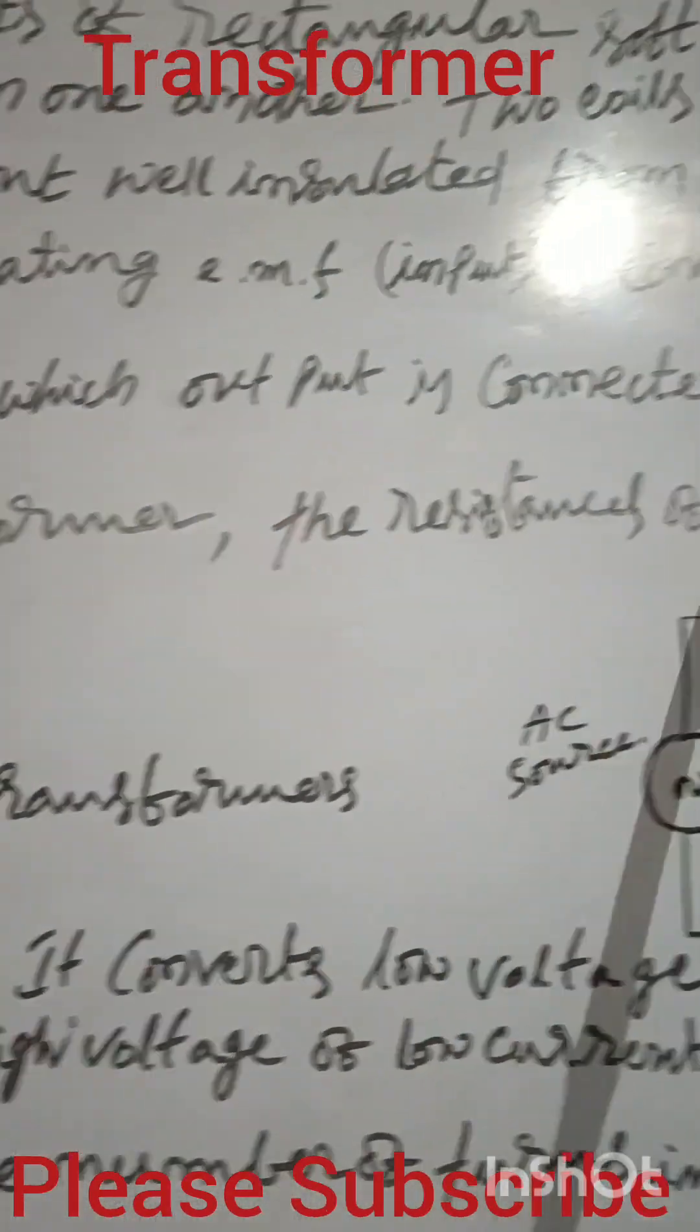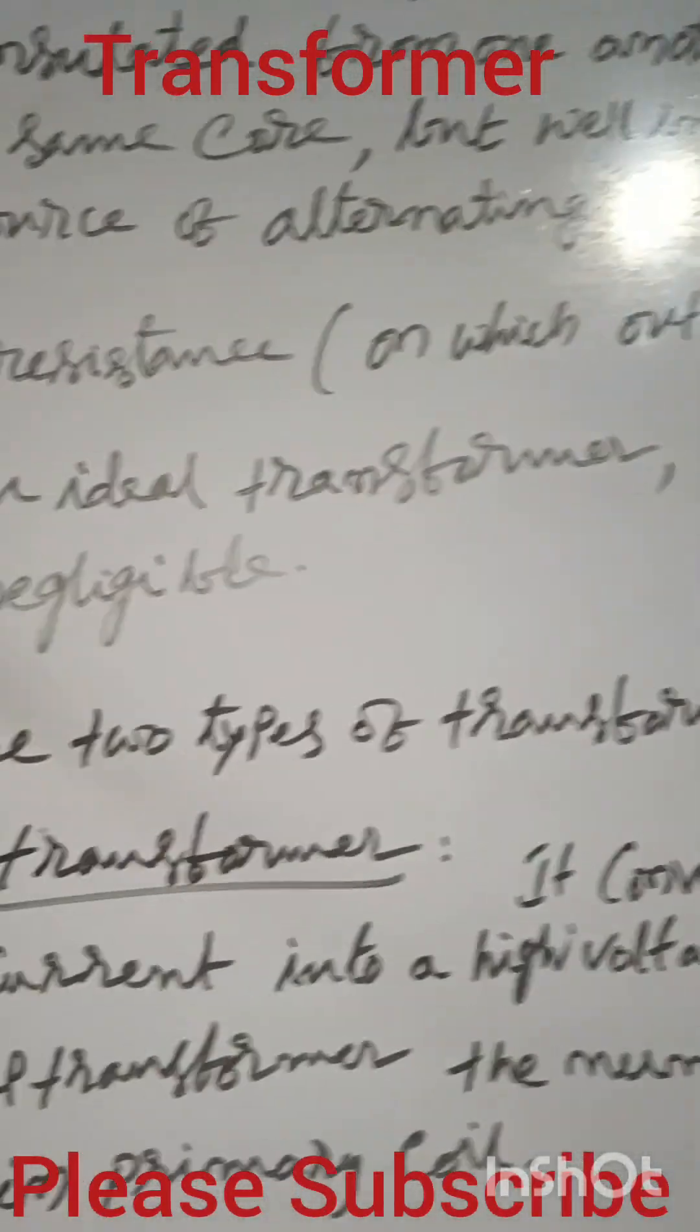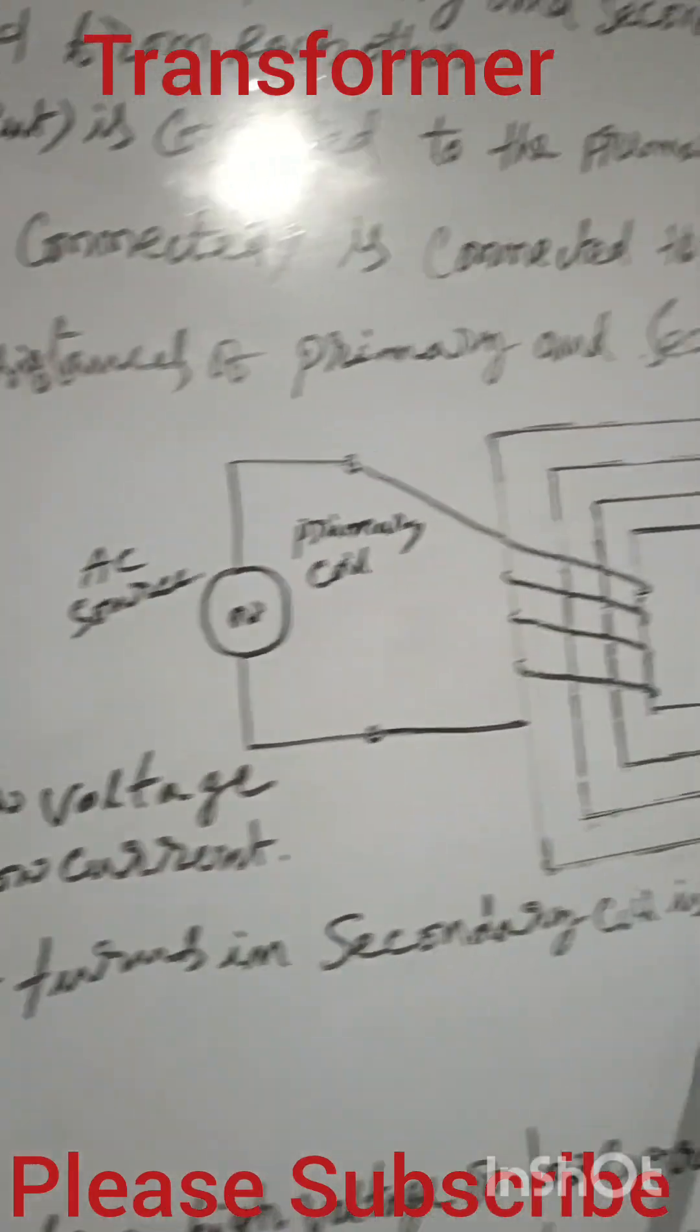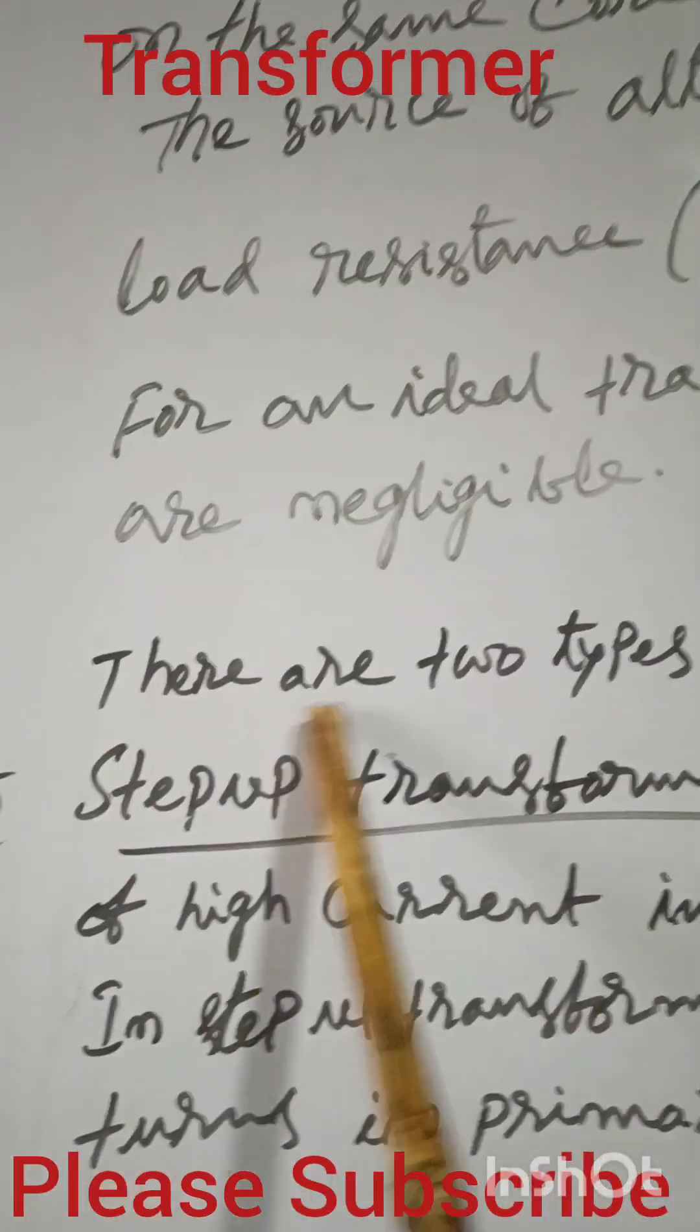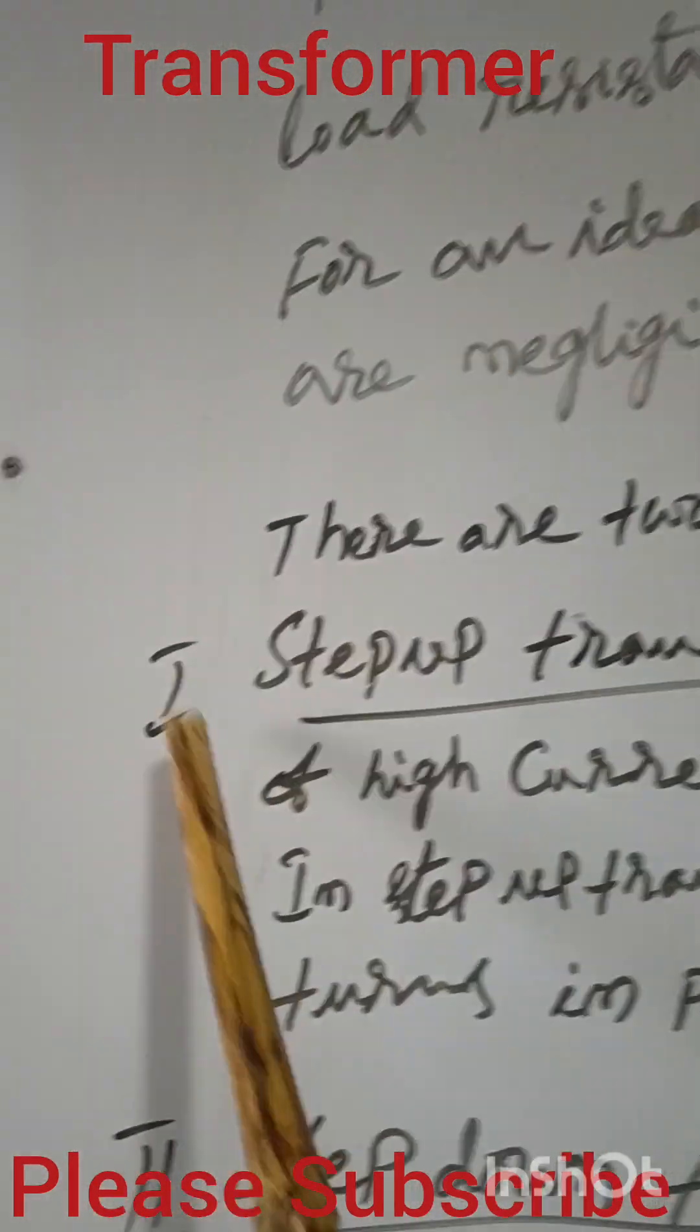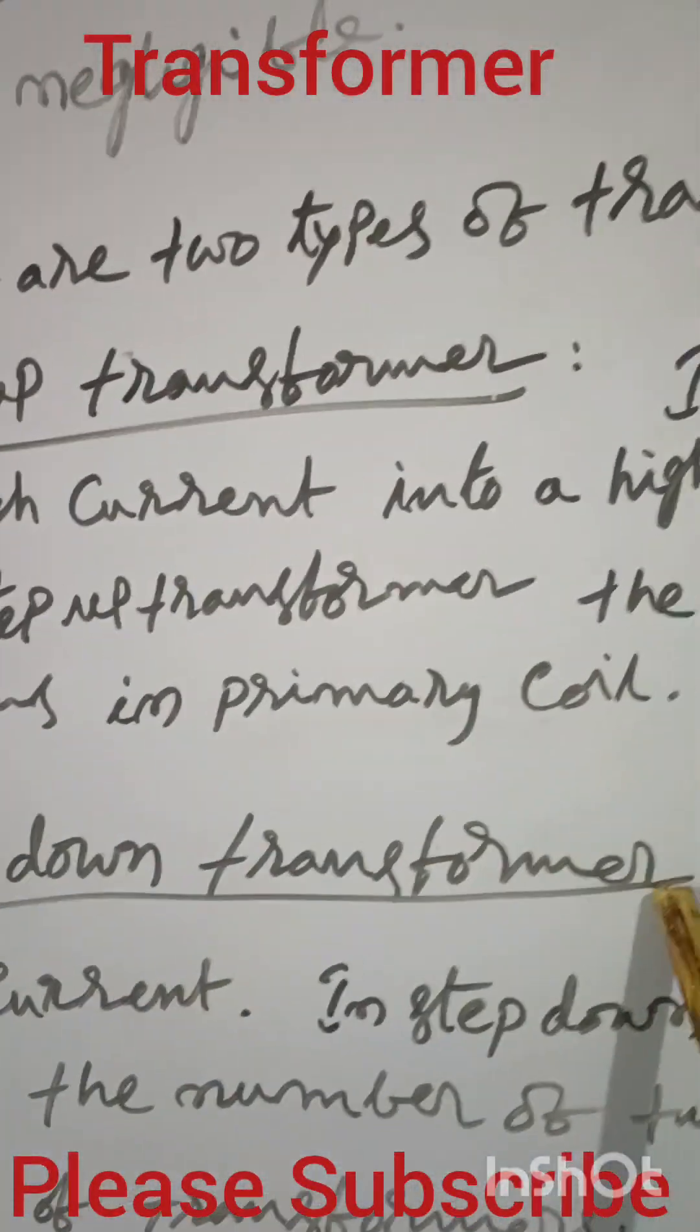So for an ideal transformer, the resistance of primary and secondary windings are negligible. It means the internal resistance of this coil and core and all will be negligible. So there are two types of transformers. One is step up transformer and the second one is step down transformer.